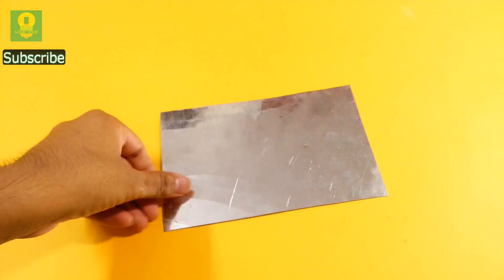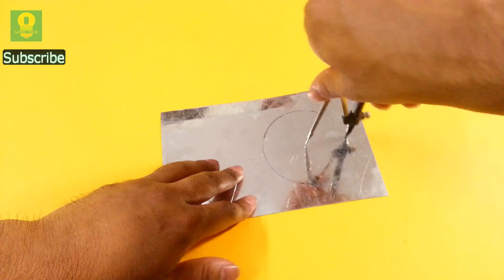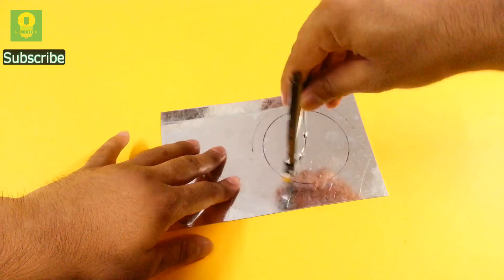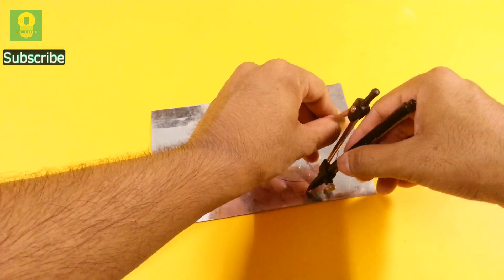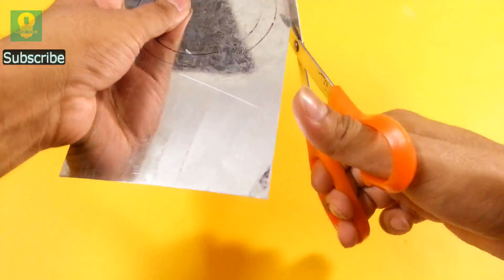Take a piece of metal sheet and draw two concentric circles of about 4 and 5 cm respectively. Cut the outer circle using metal cutting scissors.